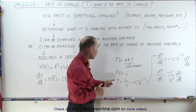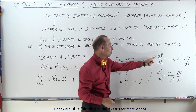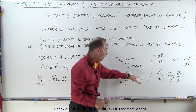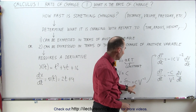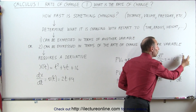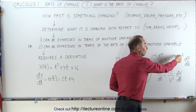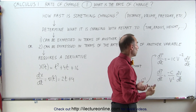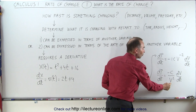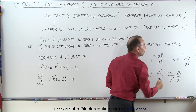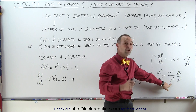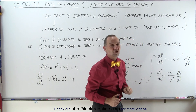If we now want to see how pressure changes with respect to time, we take the derivative of that equation with respect to time. When we do that, we get minus 1 times V to the minus 2 power, but also times the rate of change of the volume with respect to time, because we have to also take the derivative of that variable V. So the change of pressure with respect to time equals minus the constant over V squared, times the rate of change of the volume with respect to time. In this case, the rate of change of the pressure depends on both the volume and how fast the volume is changing with respect to time.